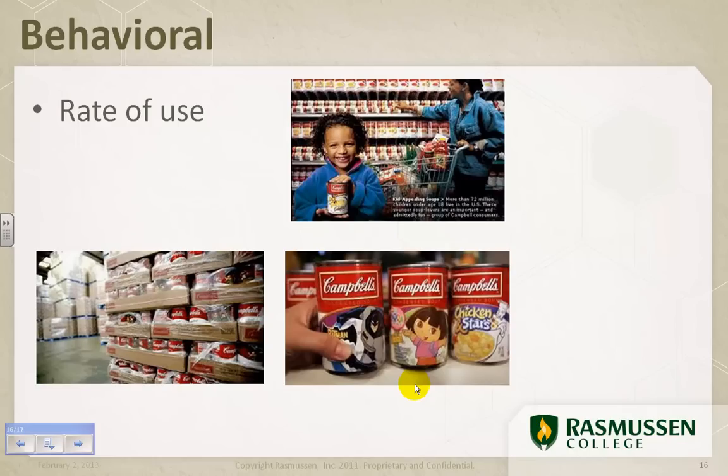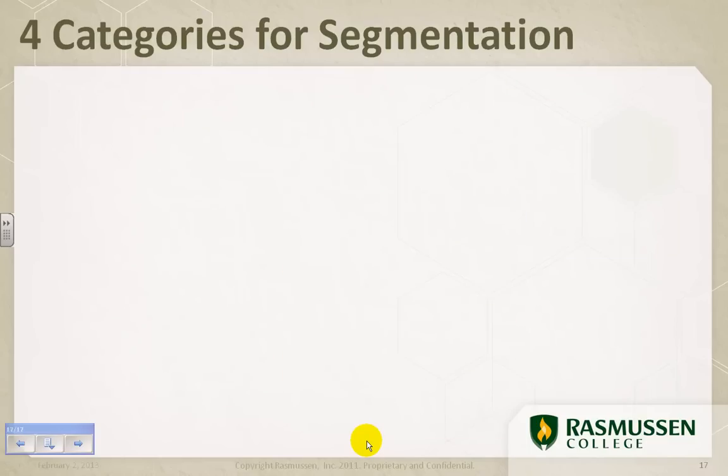How do you penetrate just a little bit more into that market? Speak to them differently. Well, licensed characters is a way to do that. Rate of use. If I am only buying 1 or 2 cans of soup, I might try Campbell's because my child wants a particular licensed character. So, there's 2 ways to look at that.